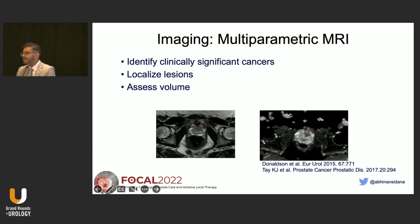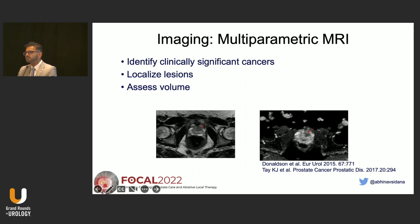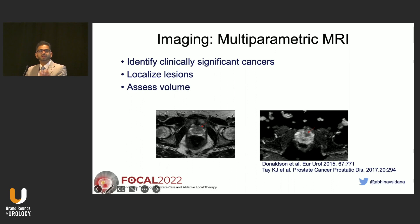Even though MRI underestimates the volume to some degree, it still gives us a good idea about the volume. You always destroy more than what the MRI is showing you, but at least it gives a good start to estimate the volume of the cancer.